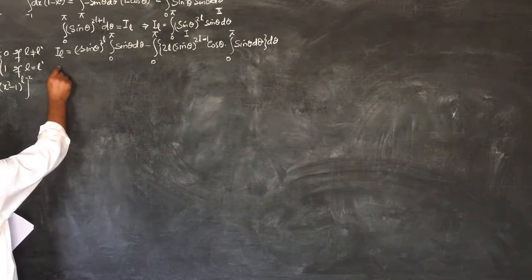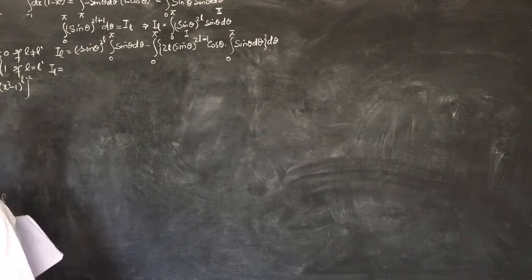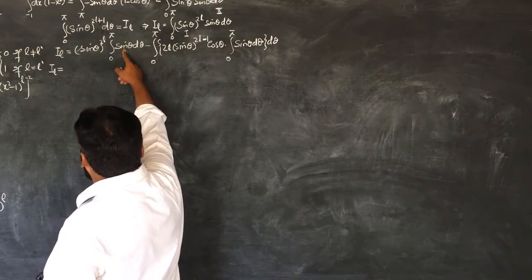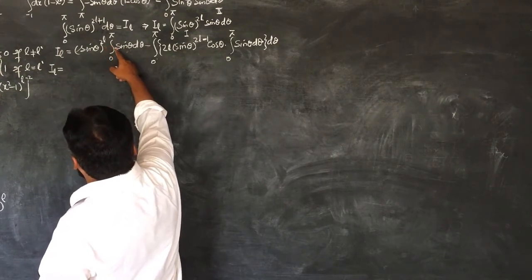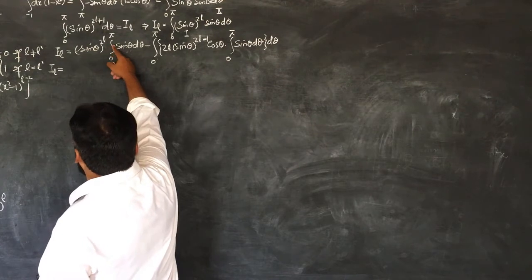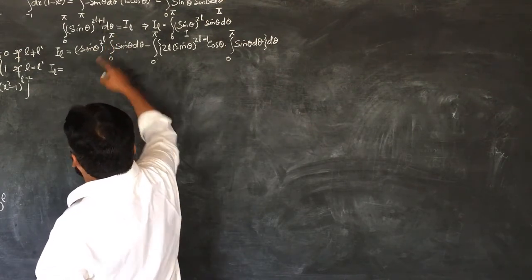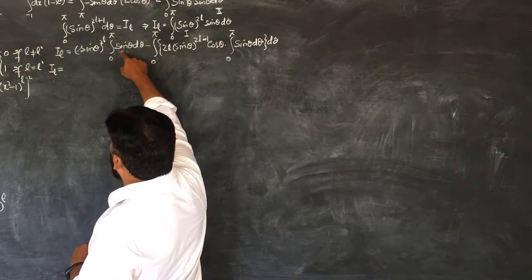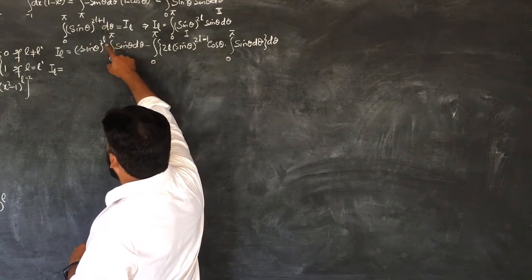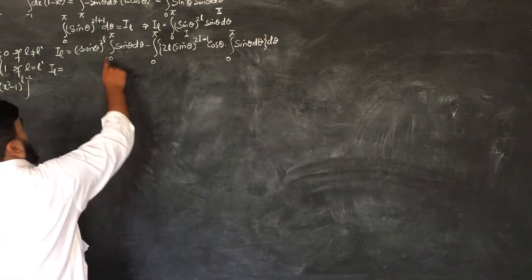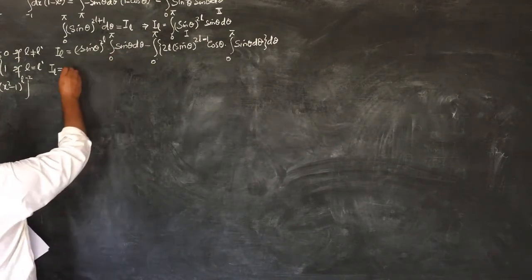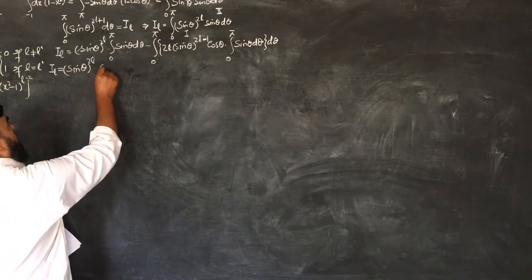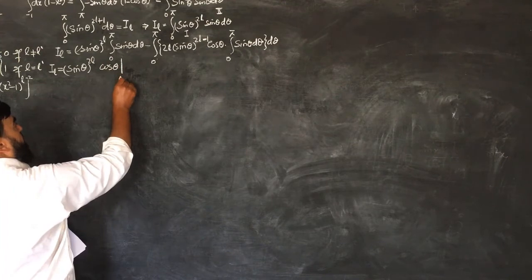Now IL equals sin^(2L) θ times [−cos θ]. Since sin θ is an odd function, writing it as minus sin θ introduces another minus, so minus times minus. I compensate by putting the limits from pi to 0, giving minus sin θ. The derivative of minus cos θ is actually sin θ. So this becomes sin^(2L) θ times cos θ, with limits from pi to 0.